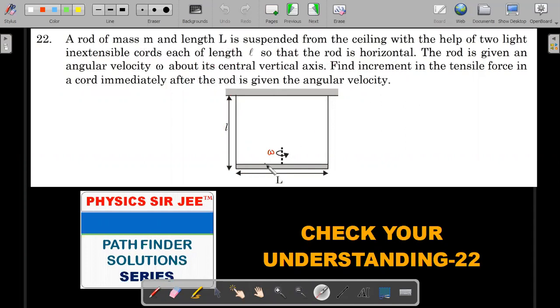So this rod is horizontal. These are the two inextensible cords. The rod is given an angular velocity omega about its central vertical axis. So this is a vertical plane. So there is an acceleration due to gravity in the downward direction. Find the increment in the tensile force in a cord immediately after the rod is given angular velocity.